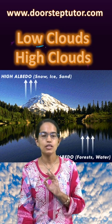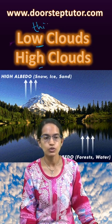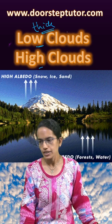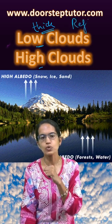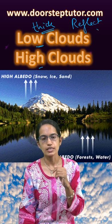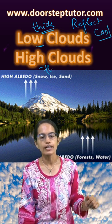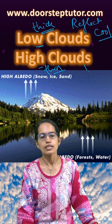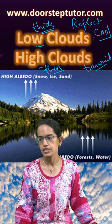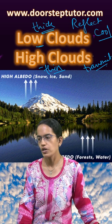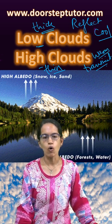A major difference between the low and the high clouds: the low clouds are usually thick. They have a tendency to actually reflect the solar waves, solar radiations, and keep the earth cool. However, the high clouds are relatively thin. They have an ability to transmit the radiations and therefore at the same time they can keep the region warm.